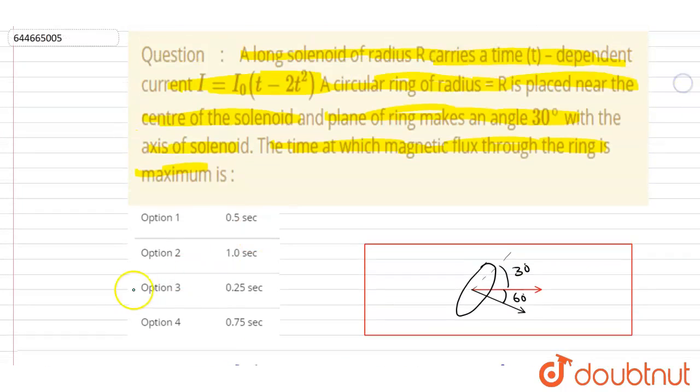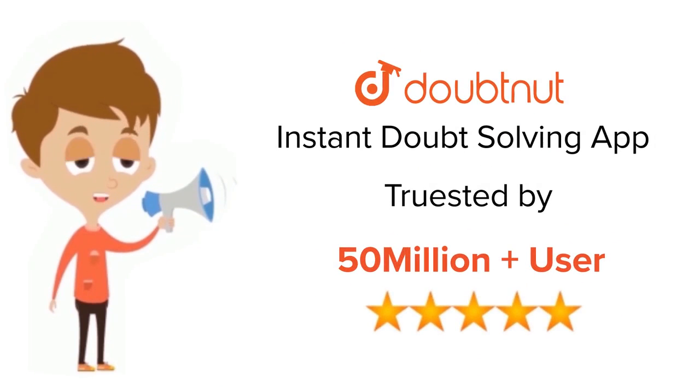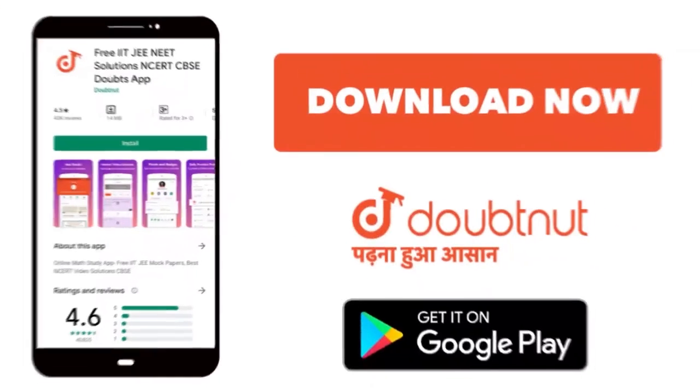Now you can check for the option here, so C is the correct one. Thank you. For class 6 to 12, IIT-JEE and NEET level, trusted by more than 5 crore students, download Doubtnut app today.